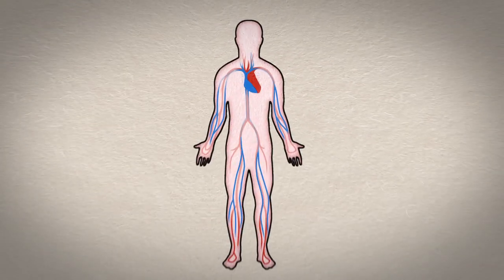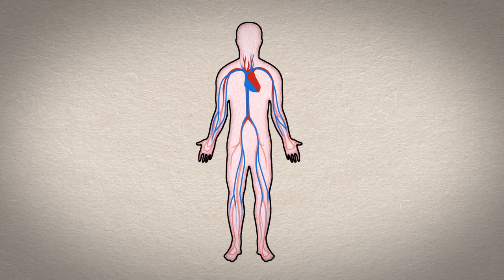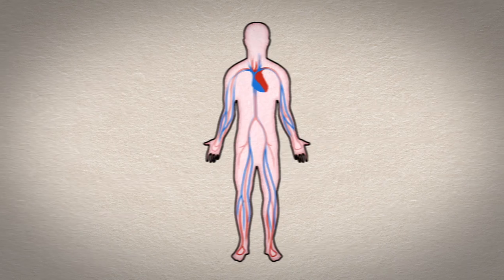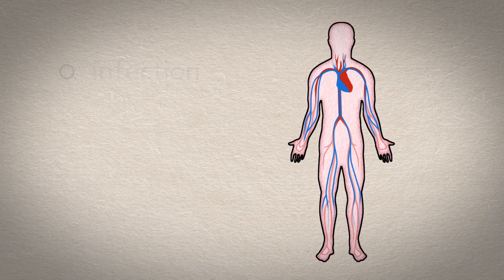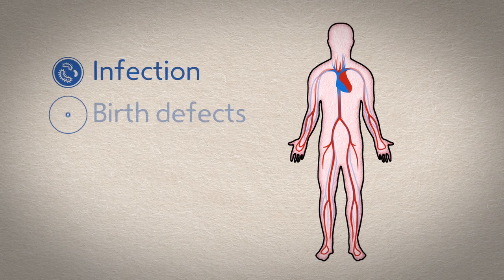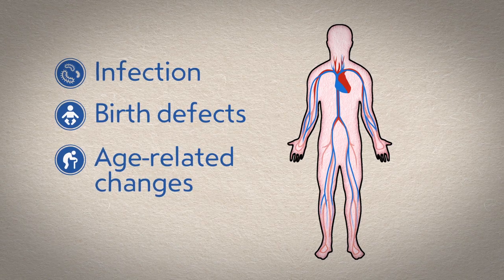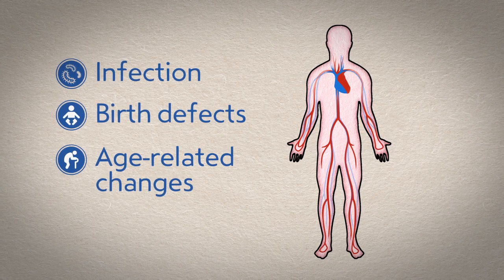Heart valve disease is a condition that occurs when one or more of your four heart valves stops working properly. Certain infections, birth defects, or age-related changes can cause heart valve disease.